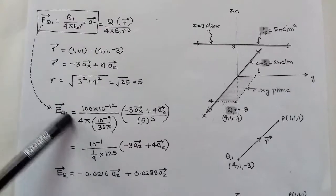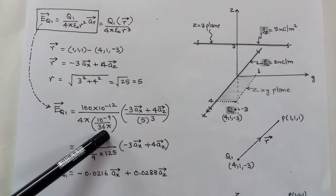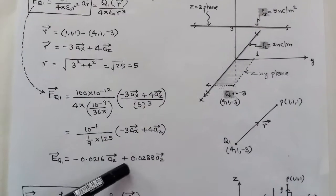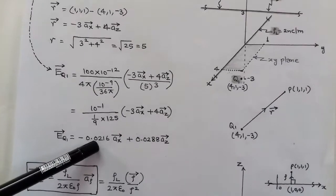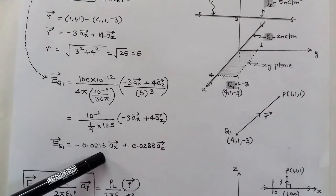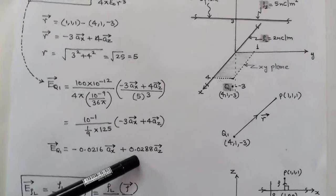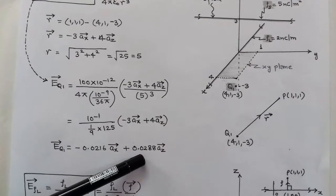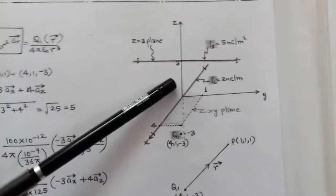The magnitude of r is √(3² + 4²) = √25 = 5. Substituting these values along with ε₀ = 10⁻⁹/36π, the electric field intensity due to charge Q1 is: −0.0216 x̂ + 0.0288 ẑ V/m.